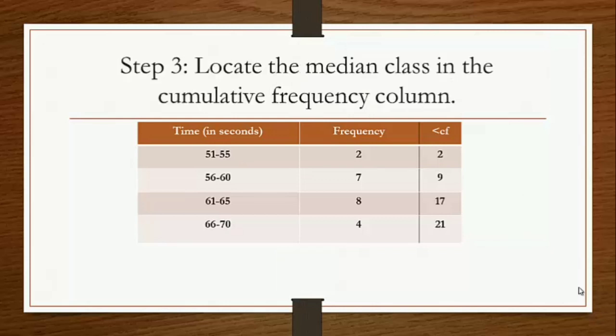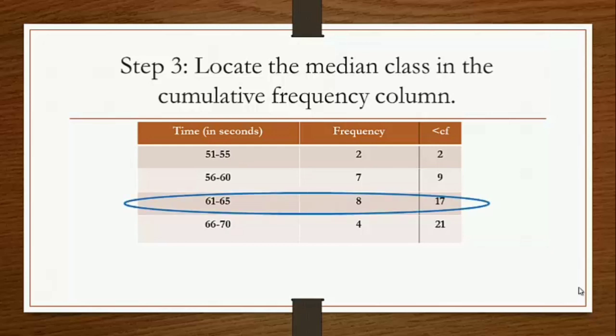The third step is to locate the median class in the cumulative frequency column. Our halfway point is 10.5. Looking at the less-than cumulative frequency column, 10.5 lies within 17. The interval corresponding to 17 is 61 to 65. Therefore, the median class is the interval 61 to 65.